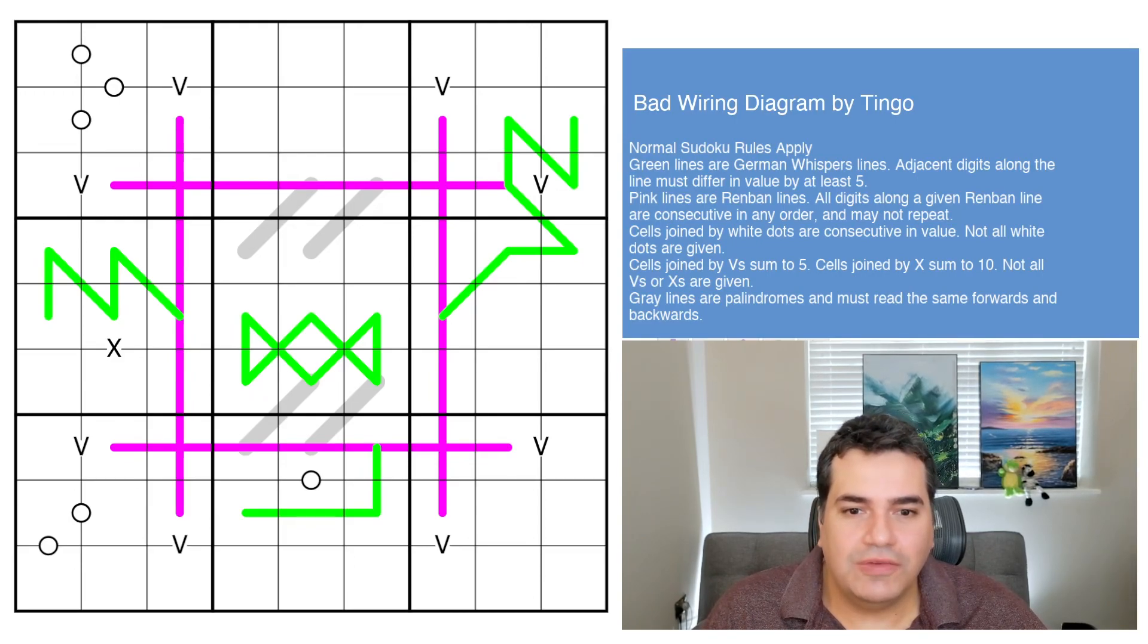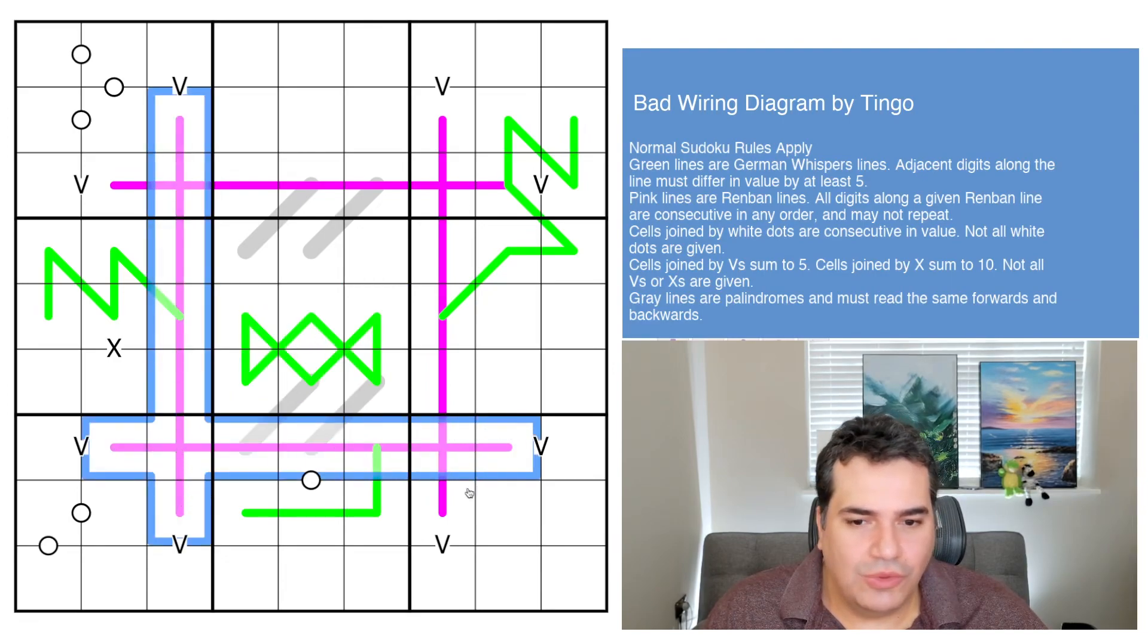Today's case is Bad Wiring Diagram by Tingo. And if any of you viewers are electricians out there, I'm sure you take a look at some of these green lines and you can indeed confirm that looks like bad wiring all over that can only result in a short circuit and tears.